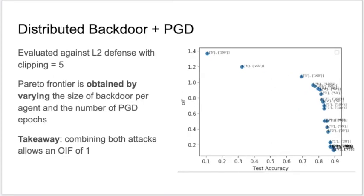This plot shows the Pareto frontier of a combination of the distributed backdoor and the projected gradient descent attack evaluated against the L2 norm clipping defense. We vary both the size of the backdoor, the number of points we are trying to misclassify, and the number of epochs. Combining both variations together results in a more effective attack which can actually recover the outsized impact factor of one, which we view as a baseline.